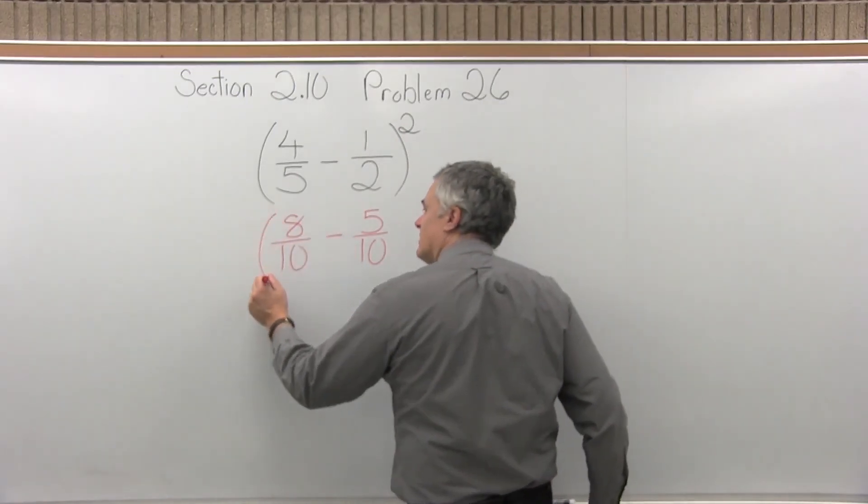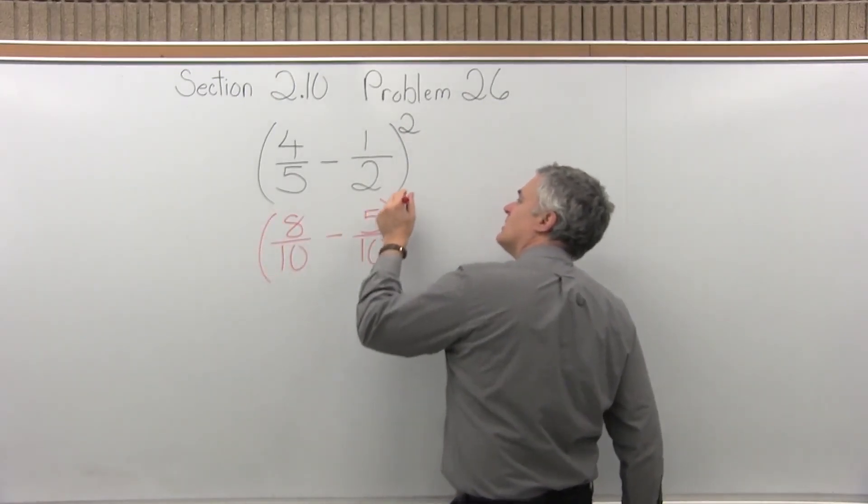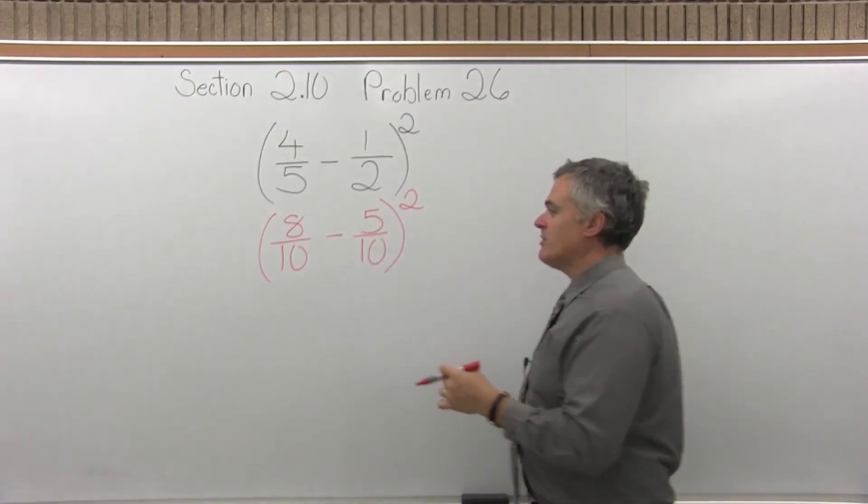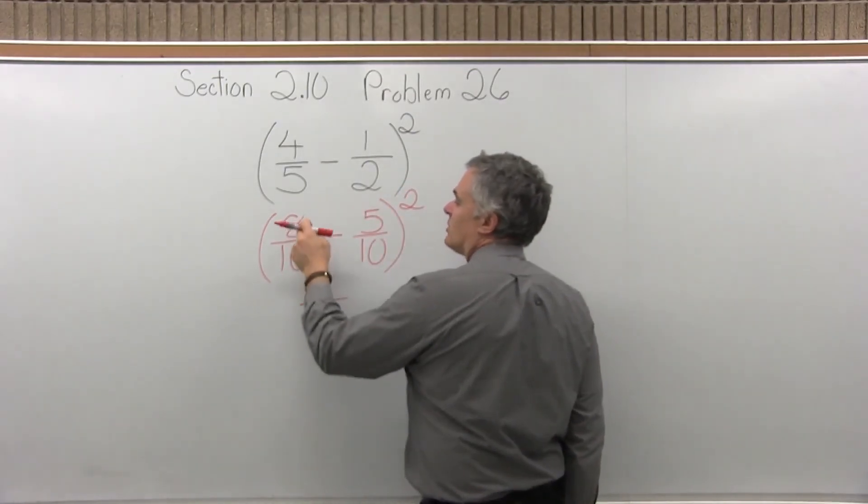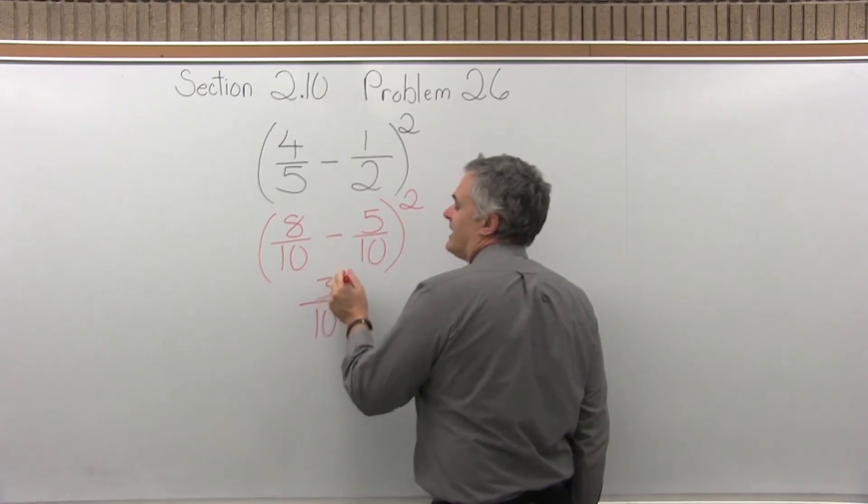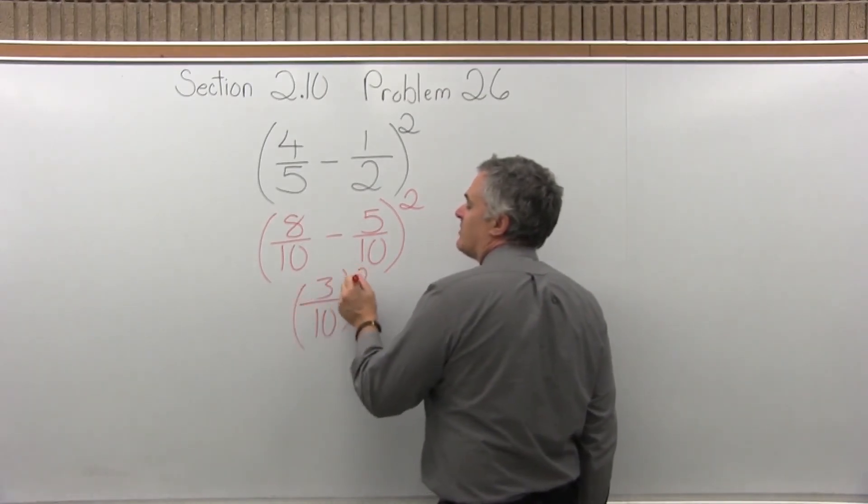It's a subtraction. It's still in parentheses. And it's still raised to the second power. But now I can do the work in parentheses. Now I have a common denominator. So combine the numerators. 8 minus 5 is 3. Common denominator is 10. And that's still raised to the second power.